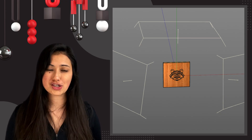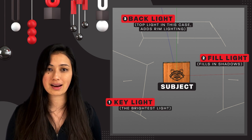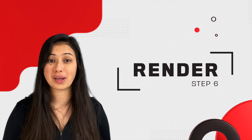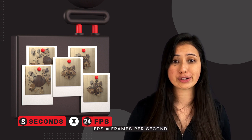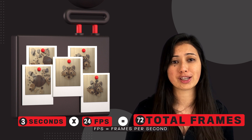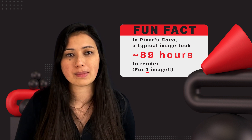Sometimes lighting can be tricky, but in this simple animation I just used a basic three-point lighting setup. Now rendering in Cinema 4D might not work the way you'd expect it to. Instead of getting a movie, you get a sequence of photos. For instance, my animation was three seconds long and 24 frames per second, so I got 72 images when I rendered out of Cinema 4D. This is a pretty small project and it rendered fairly quickly, but sometimes renders can take days or even weeks depending on the size of your animation.